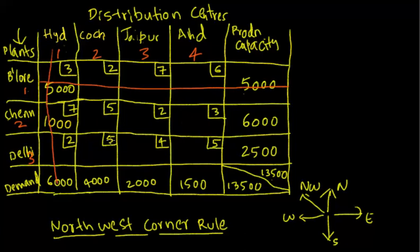Out of the six remaining cells, the northwest corner-most cell is x22. Target this cell and ship as many units as possible from Chennai plant to Kuchin distribution center. Kuchin has a requirement of 4000. Chennai, after supplying 1000 units, still has 5000 to supply. So I'll ship all 4000 units from Chennai to Kuchin. After shipping, cancel the column that has been satisfied — this column is now cancelled.